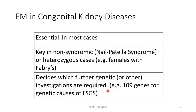An important point is that electron microscopy decides which further genetic or other investigation is required. For example, take FSGS — about 11% of FSGS cases have a genetic mutation behind them. However, there are 109 genes responsible for FSGS mutations, and therefore electron microscopy will indicate which of these 109 genes should be investigated, narrowing the field and making it more practical.